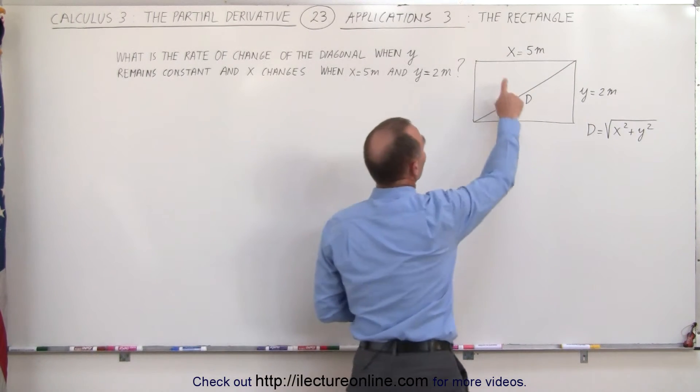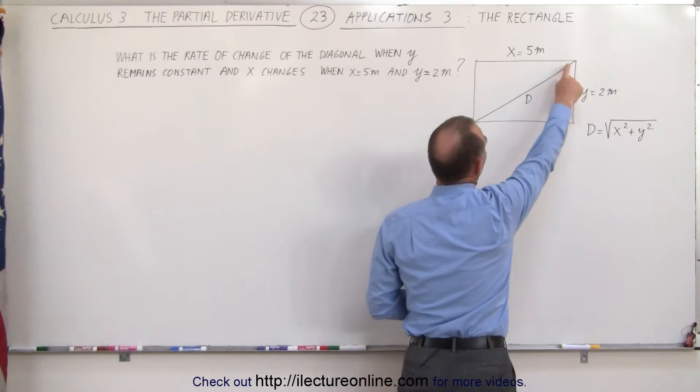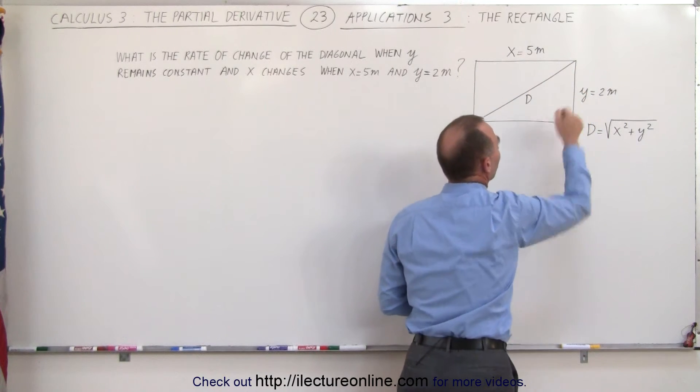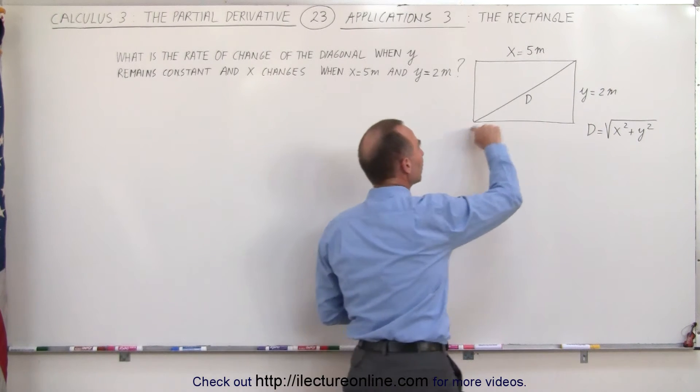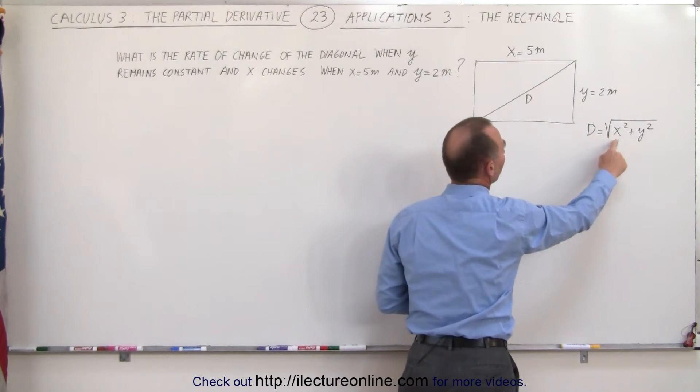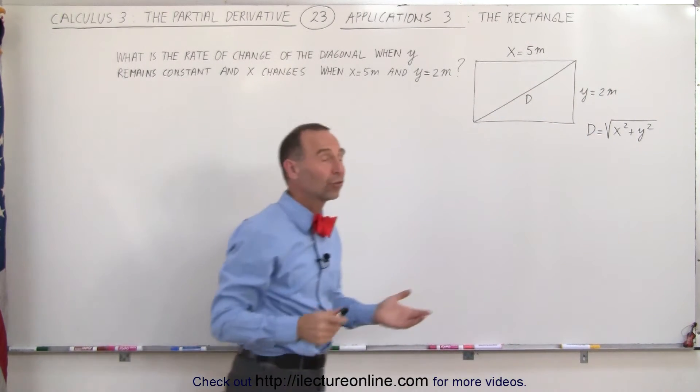At this moment the rectangle has a length represented by x equals 5 meters and a width represented by y equals 2 meters. We can then see that the diagonal d is equal to the square root of x squared plus y squared.